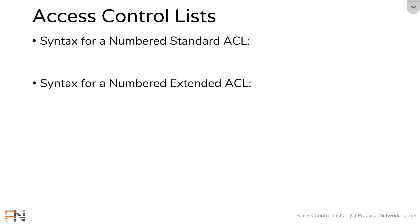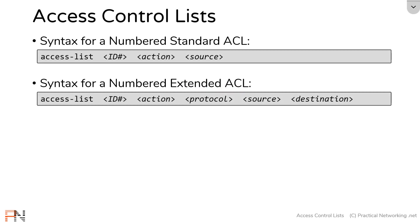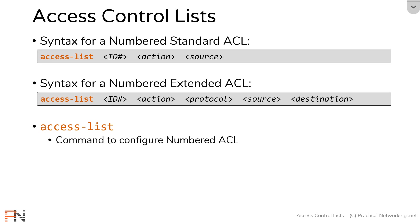Here is the syntax for configuring numbered access lists on Cisco routers. Notice I'm giving you two sets of syntax — one for standard access list and one for extended access list. These commands configure a single line in a standard or extended access list. To configure any numbered access list, you're always going to start with the command 'access-list'.